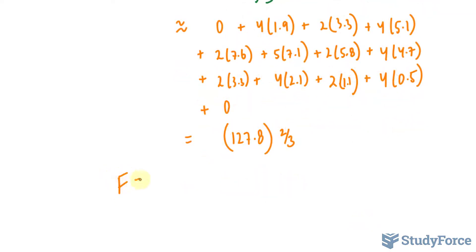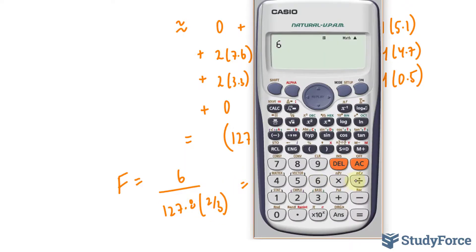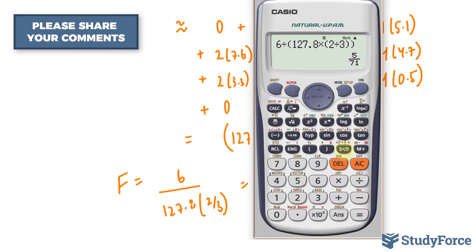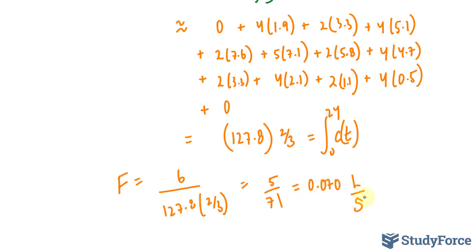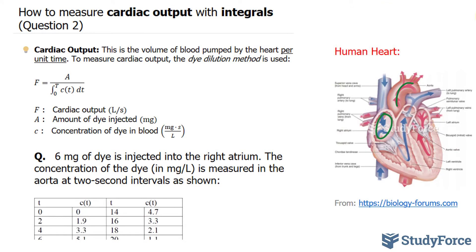So let's write out what we know. Our cardiac output is the amount of dye, which was 6 milligrams, over c(t), remember this is c(t), between 0 and 24. 127.8 times 2 over 3 gives us 5 over 71, which is approximately 0.070 liters per second. So there you have it. That is how to use Simpson's rule to measure the cardiac output using integrals.